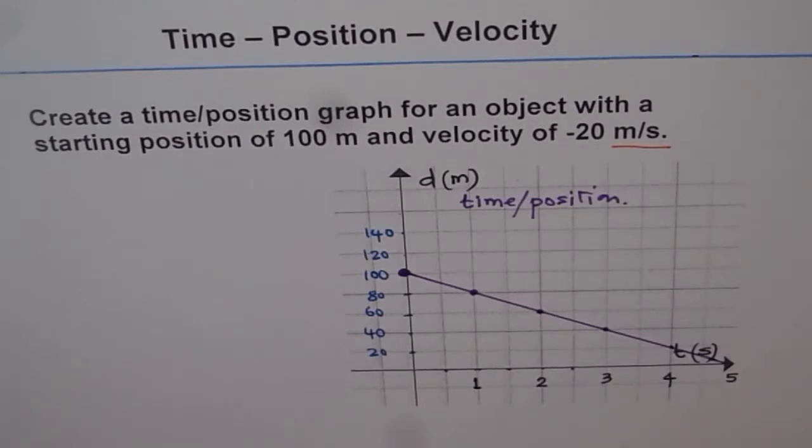So that is how we are going to sketch this graph. I hope you understand how we took the scale and why we have drawn a line which is decreasing, coming downwards as we move. Since the velocity is negative, the distance is decreasing. The object is approaching. So that is the concept you need to remember. Thank you.